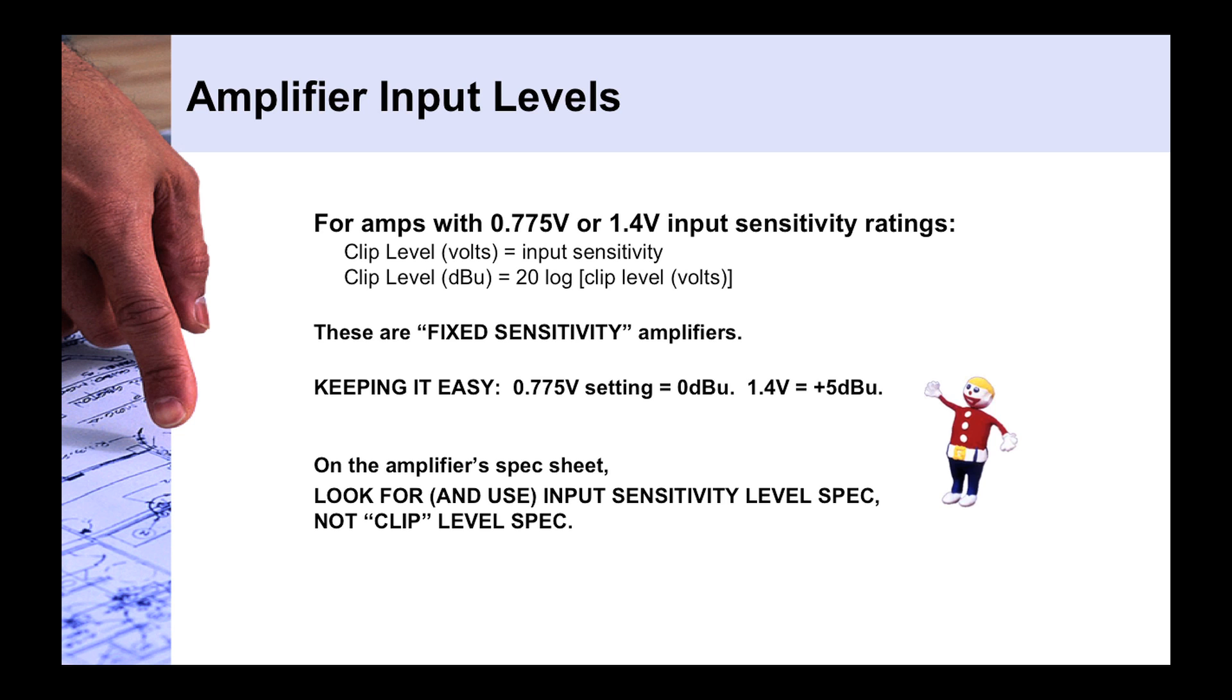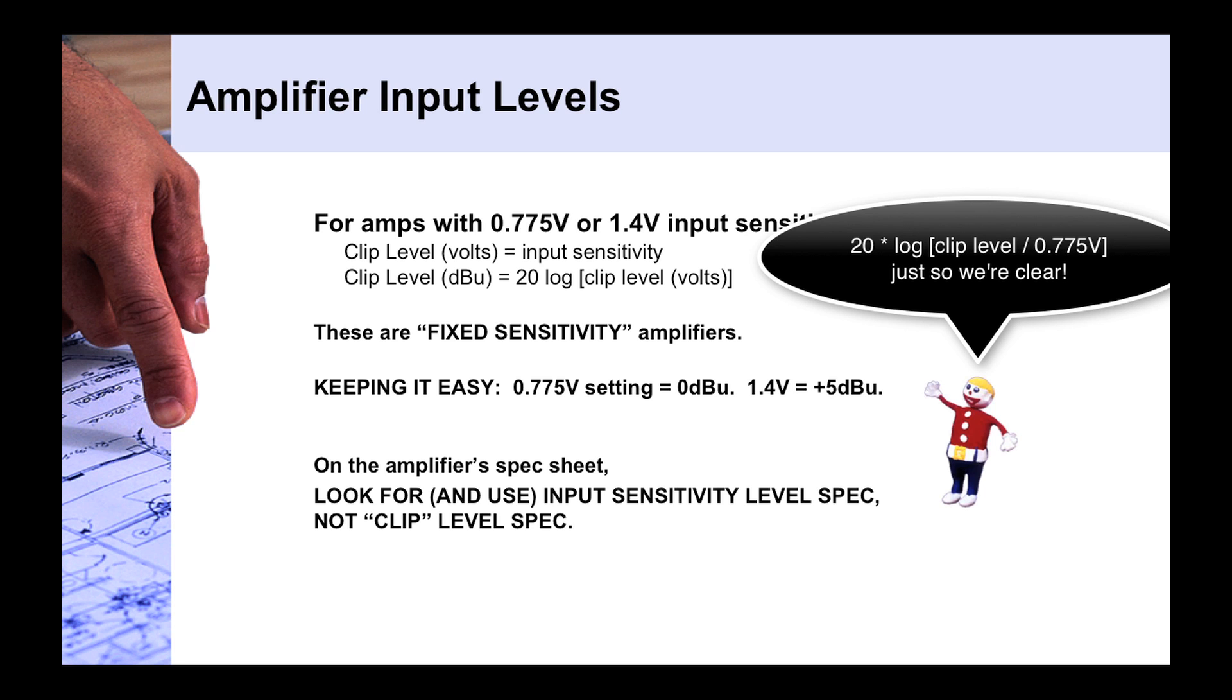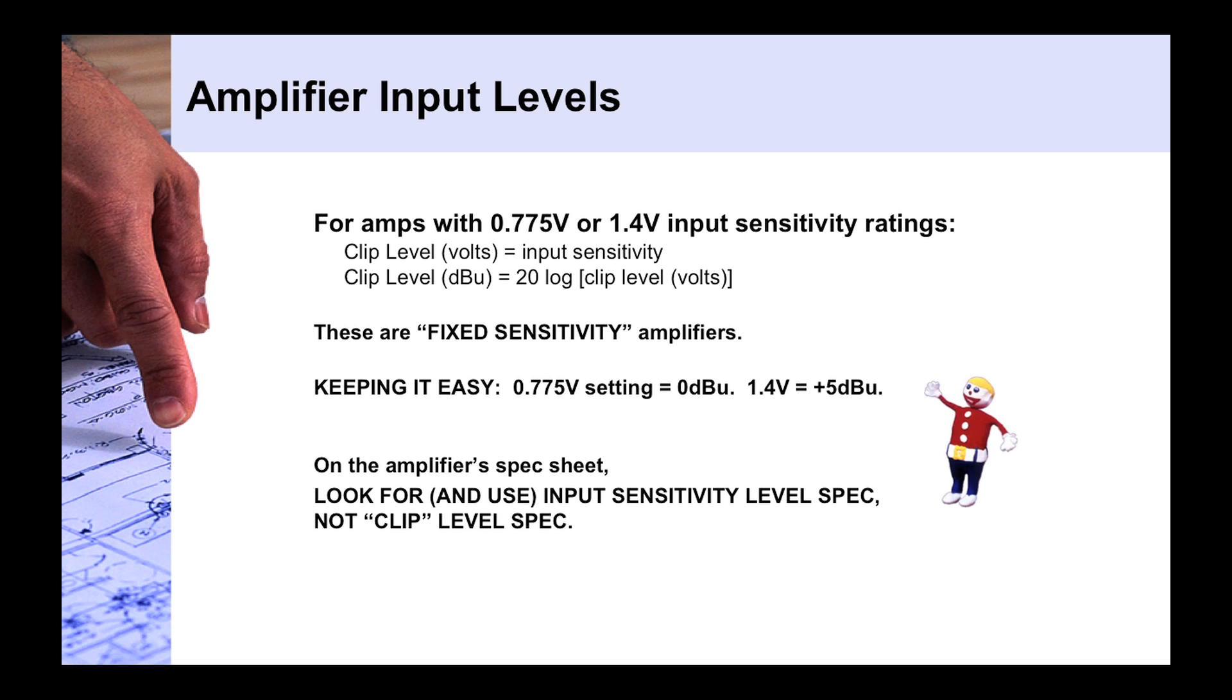So no matter how powerful the amp, you're going to have an input setting that's fixed, very easy to deal with. And typically you're going to see these as either 0.775 volts or 1.4 volts. That's not to say they couldn't be different, but these are the most common. In fact, 1.4 volts is one of the most common input sensitivity settings for amplifiers out there. And so to find the clip level, you simply plug it into your trusty dBu calculation formula. So you take 20 log of the clip level volts divided by 0.775, which is our standard dBu calculation. And we come up with plus 5 dBu. Pretty straightforward, fairly simple. Not a whole lot of math to do because generally you just plug in 1.4 volts, convert that to dBu, and you're done.